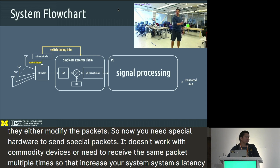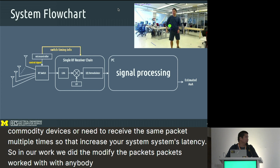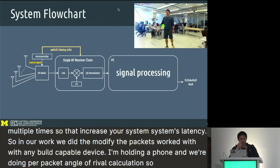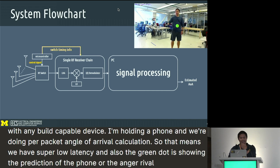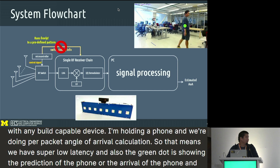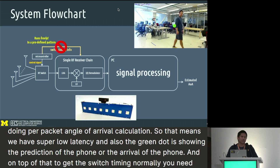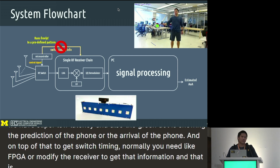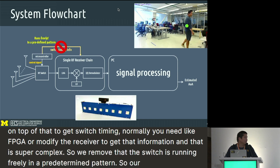In our work, we do not modify the packets. It works with any BLE-capable device — I'm holding a phone — and we do per-packet angle of arrival calculation, so we have super low latency. The green dot shows the predicted angle of arrival of the phone. On top of that, to get the switch timing, normally you need an FPGA or need to modify the receiver. We remove that — the switch runs freely in a pre-determined pattern. Our system looks like that picture.